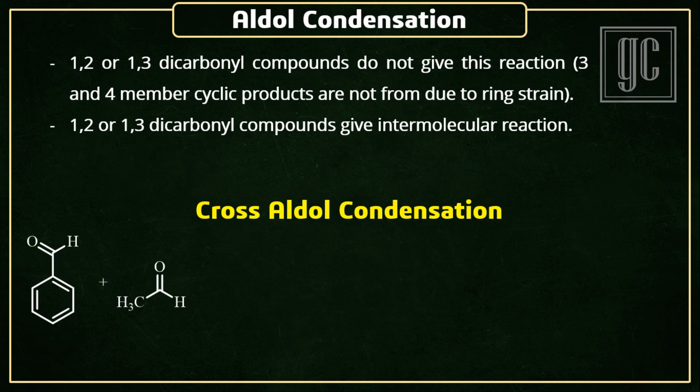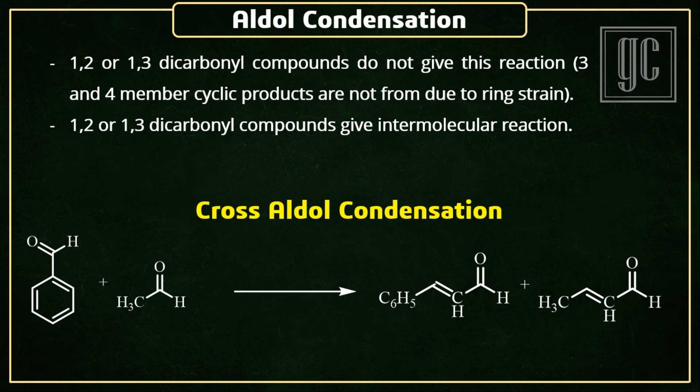Next is cross aldol condensation. When two types of substrates are used for aldol condensation, it is known as cross aldol condensation. Here, a variety of products are formed and it depends on the type of molecules taking part during the reaction.